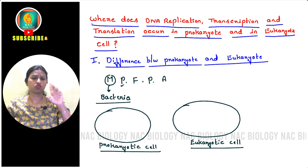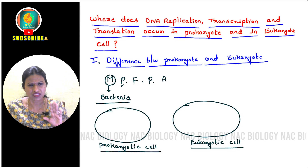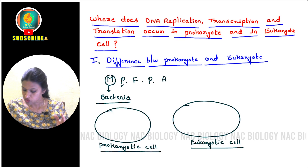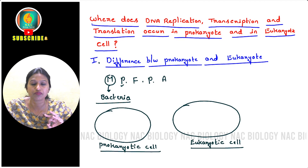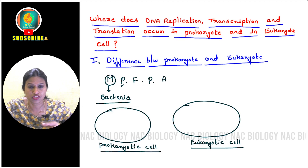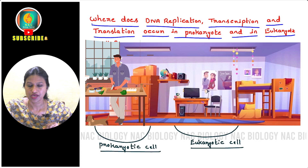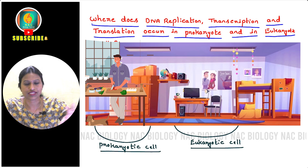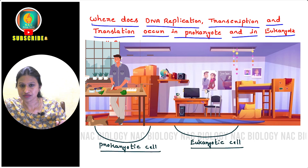We have understood that Monera, i.e., bacteria, comes under the prokaryotic group, and the rest are eukaryotic. But what is the difference — why do we consider one a prokaryotic cell and the other a eukaryotic cell? Let me give you a simple analogy. Imagine you have entered a bachelor's room where a guy has kept a gas stove on a slab and says, 'This is my kitchen.'